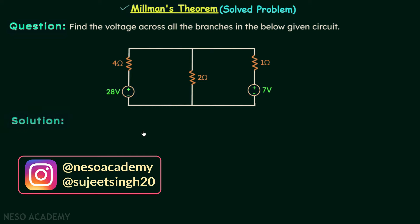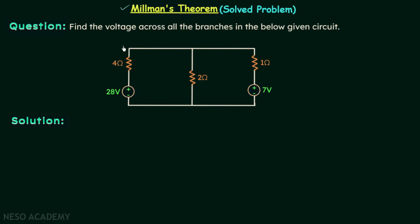Let us understand how to find the voltage across the three branches with the help of Millman's theorem. I will call the first branch branch number one, the second one branch number two, and this one branch number three. In the first branch we have one voltage source providing 28 volts and one resistor with value 4 ohms. I will call this voltage E1 and this resistance R1, so E1 is equal to 28 volts and R1 is equal to 4 ohms.